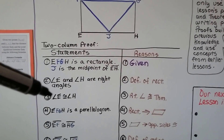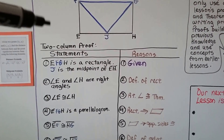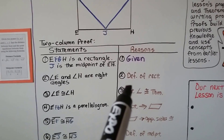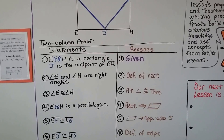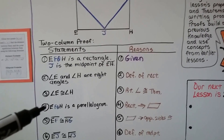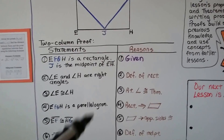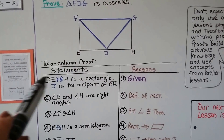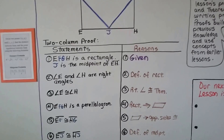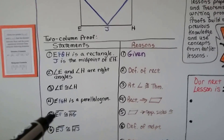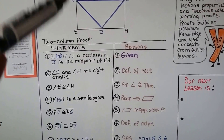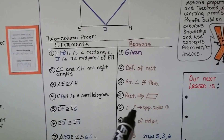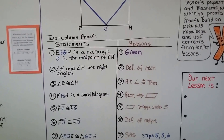Statement three: angle E is congruent to angle H. If they're both right angles, then they're congruent to each other — that's the right angles congruence theorem. Statement four: EFGH is a parallelogram, because if it's a rectangle then it's a parallelogram, and it tells us it's a rectangle in the given. Statement five: segment EF is congruent to segment HG, because if it's a parallelogram then the opposite sides are congruent.